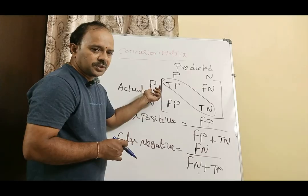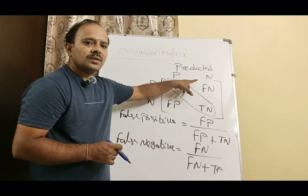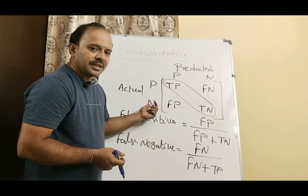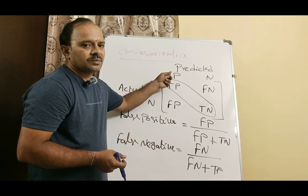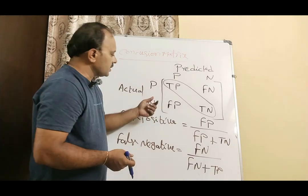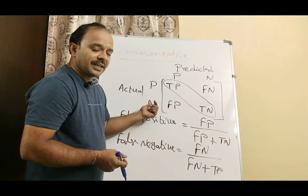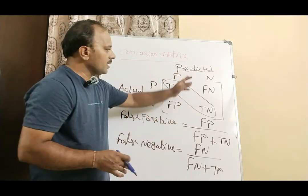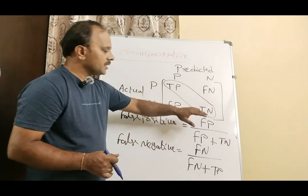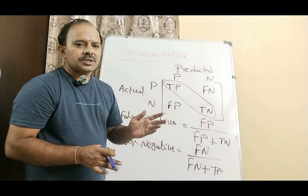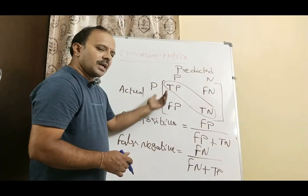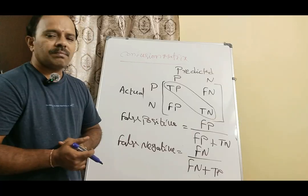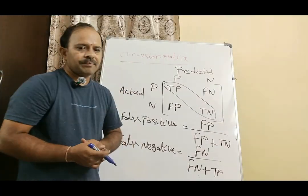Actual positive but predicted as negative is false negative. Actual negative but predicted as positive is false positive. Actual negative and predicted as negative is true negative. Do not confuse with positive and negative — it can be one and zero. This is a very useful performance tool for classification problems. Thank you.